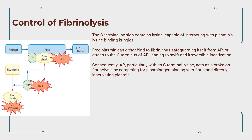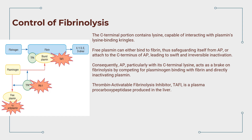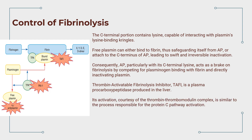Consequently, alpha-2-antiplasmin acts as a brake on fibrinolysis by competing for plasminogen binding with fibrin and directly inactivating plasmin. Our final act features thrombin-activatable fibrinolysis inhibitor, TAFI, a plasma procarboxypeptidase produced in the liver. Its activation is courtesy of the thrombin-thrombomodulin complex, similar to the process responsible for protein C pathway activation. However, TAFI operates independently as an antifibrinolytic agent.